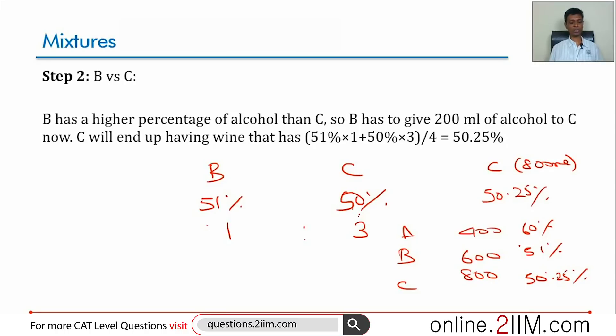Never will the person having higher percentage keep shifting from B to C. What I mean is if B has higher percentage than C, say B has 53% and C has 50%, B will give to C. Then C will have a different percentage but B will continue to have a higher percentage than C. Whenever